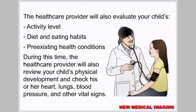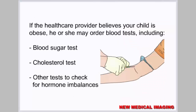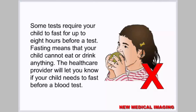The health care provider will also review your child's physical development and check his or her heart, lungs, blood pressure, and other vital signs. If the health care provider believes your child is obese, he or she may order blood tests, including a blood sugar test, a cholesterol test, and other tests to check for hormone imbalances. Some tests require your child to fast for up to eight hours beforehand, meaning your child cannot eat or drink anything.